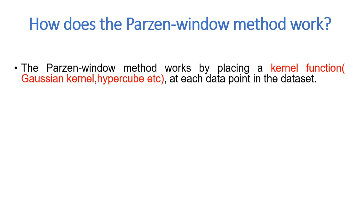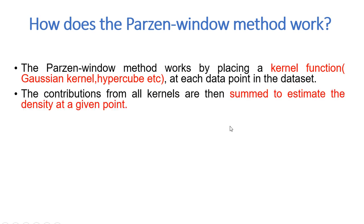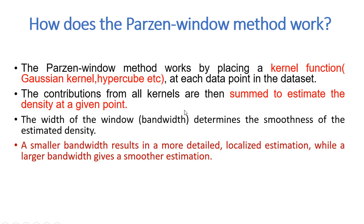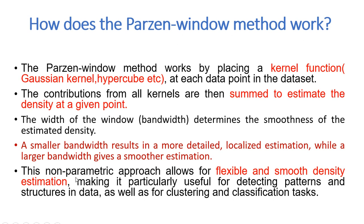The first thing is you need to understand what kind of kernel function you need for the window. You can choose a Gaussian kernel, a hypercube — maybe a two-dimensional or three-dimensional hypercube — and then you place this kernel function at each data point in the dataset. Then you sum up all the contributions of all these kernels in order to estimate the density at a given point. The bandwidth will actually determine the smoothness of the density estimated. A smaller bandwidth will give a more detailed and localized estimation; a larger bandwidth will give a smoother estimation. Parzen Window gives flexibility and smooth density estimation, making it very useful to detect patterns, detect structures in data, or work on clustering and classification tasks.